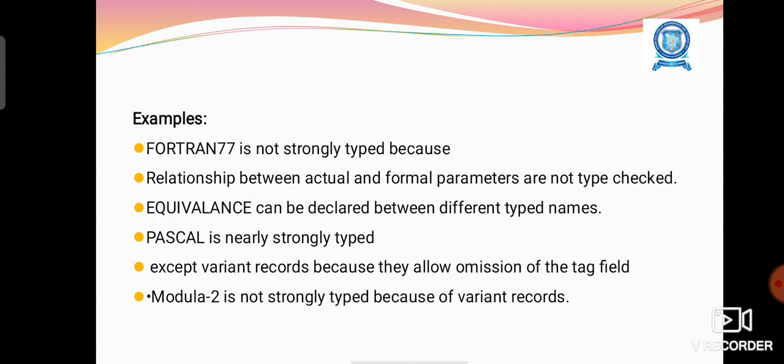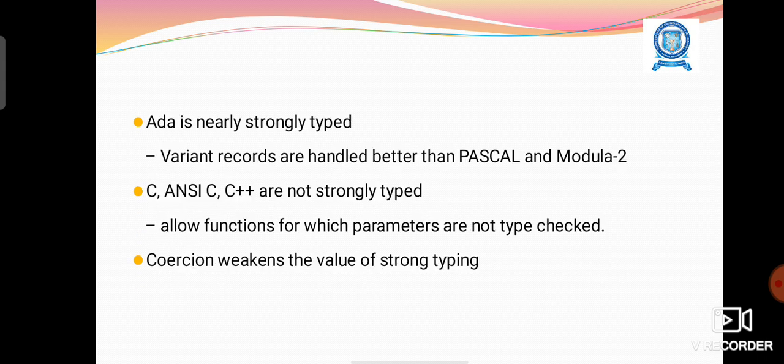For example, Fortran 77 is not strongly typed. Pascal is nearly strongly typed. Modulo 2 is not strongly typed because of variant records. Ada is nearly strongly typed.